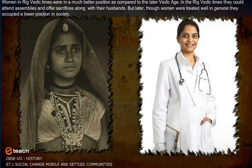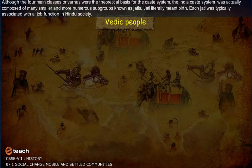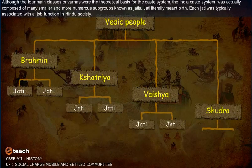Women in Rig Vedic times were in a much better position compared to the later Vedic age. In the Rig Vedic times they could attend assemblies and offer sacrifices along with their husbands. Later, though women were treated well in general, they occupied a lower position in society.